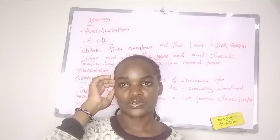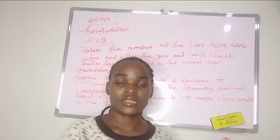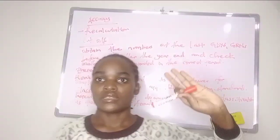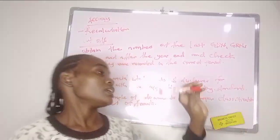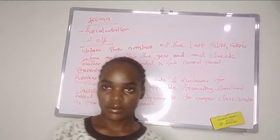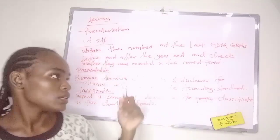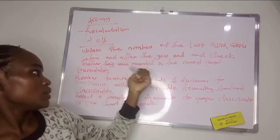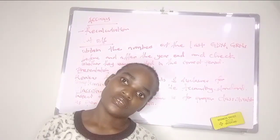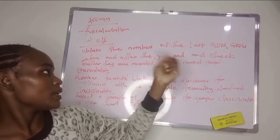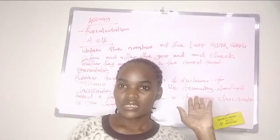When it comes to cutoff, remember you're making sure that something is recorded in the correct accounting period. The common substantive procedure you can use anywhere is: obtain the number of the last GDNs before and after the year-end and check whether they were recorded in the correct period. This applies to sales and also to inventory.